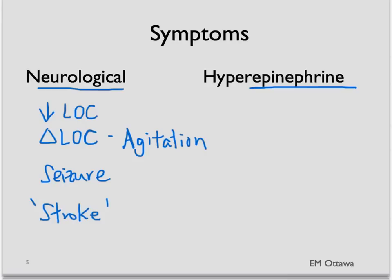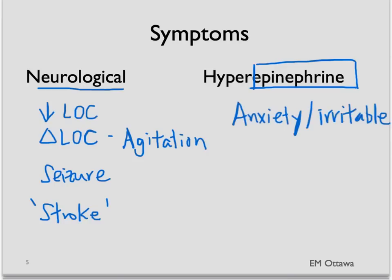With the fall in blood sugar, the body releases catecholamines. Epinephrine is one of these catecholamines, and this causes the following symptoms: anxiety, irritability, palpitations, and diaphoresis. These are from the epinephrine in the body.